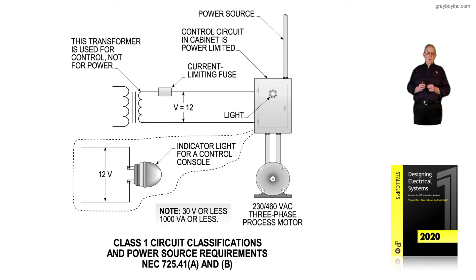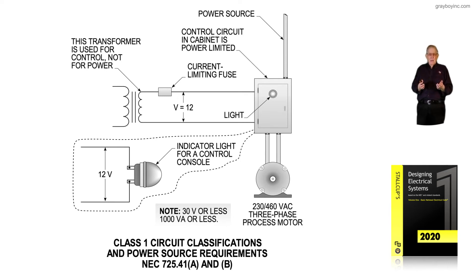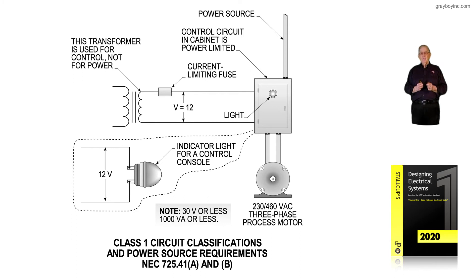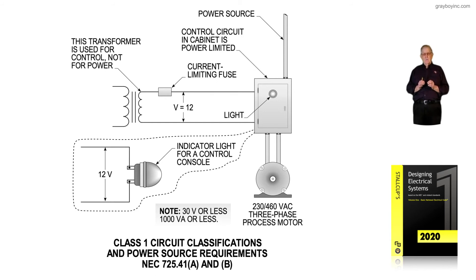In the definitions under Article 100 of NFPA 70E, OSHA gives us a Class 2 circuit without specific requirements pertaining to shock hazards or fire hazards. However, if you have a Class 2 or Class 3 circuit, that circuit must be evaluated to see if it is a shock hazard or a fire hazard.